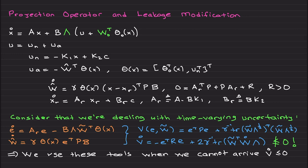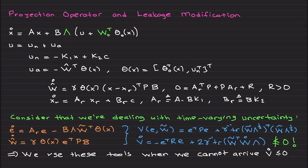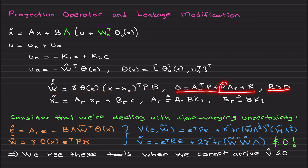We use these tools when we cannot arrive at a derivative less than or equal to zero. To illustrate, we have the same system with structured uncertainty. The nominal control signal and adaptive control signal are combined — u_n was included in the basis function because of the unknown lambda. The weight update rule uses positive-definite gamma, yielding a unique positive-definite solution P for a given positive-definite R. This was the reference model capturing ideal performance.